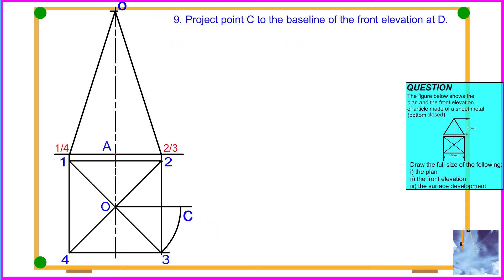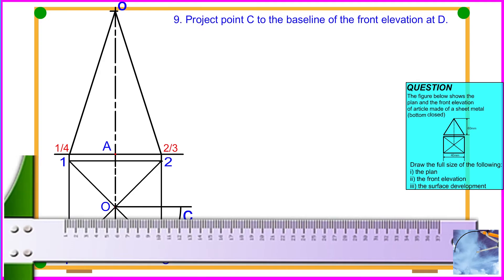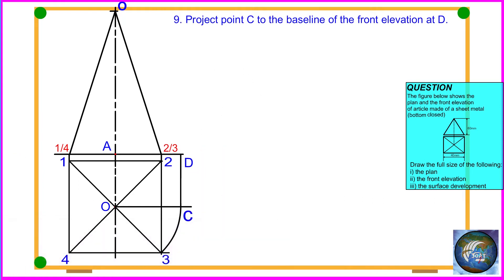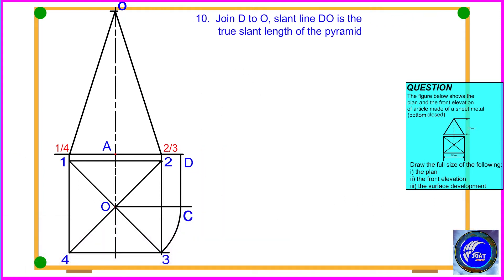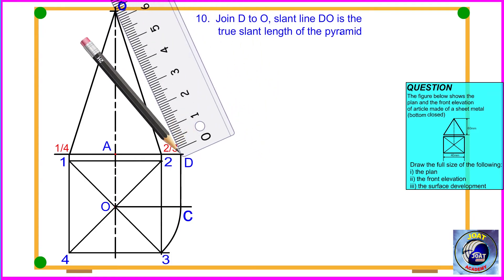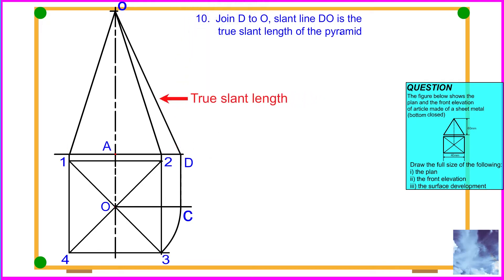Procedure 9: Project point C to the baseline of the front elevation at D. O-D is the true slant length of the pyramid.